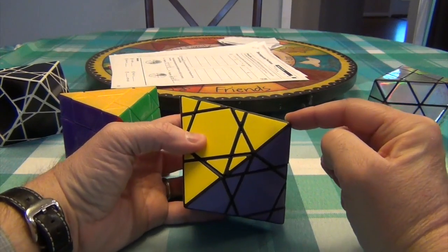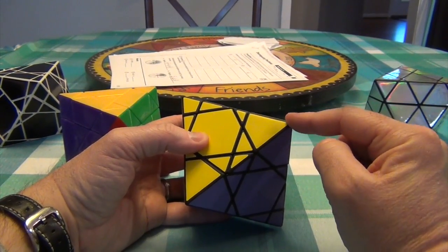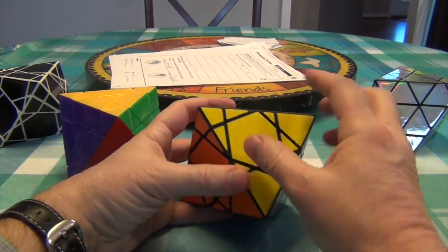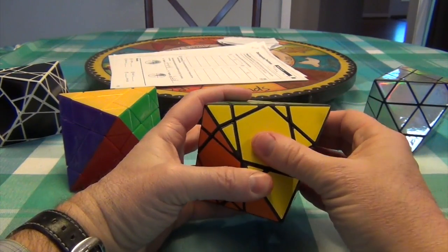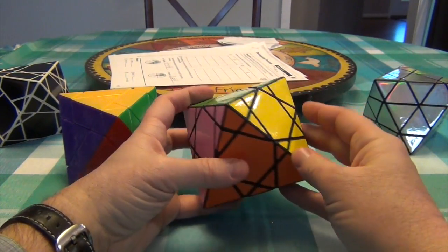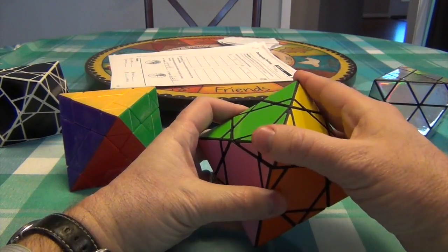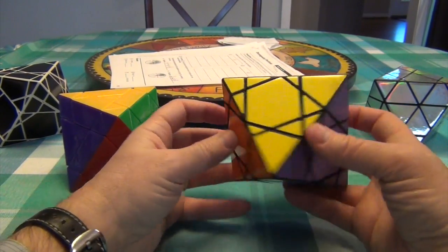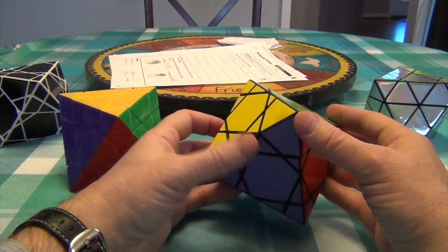This is an edge. This corner piece, corner looking piece, is actually an edge. This center looking piece is actually an edge. And anything around here are triangles. So each side consists of one corner piece that actually looks like a corner piece, and two corner pieces that are two colors.